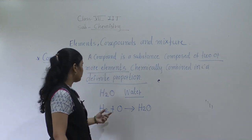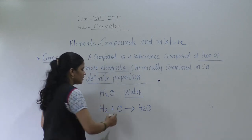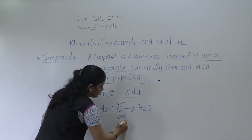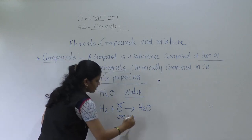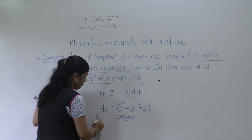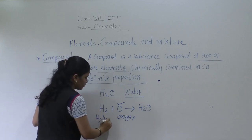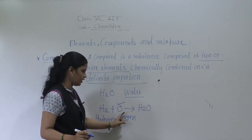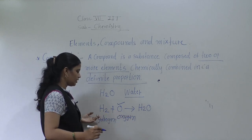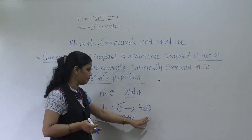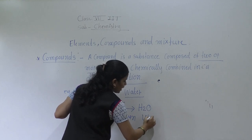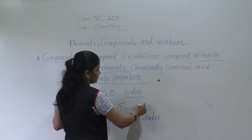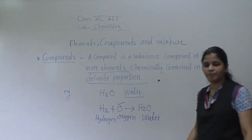Why is H2O a compound? Because here there is more than one element. Oxygen is one separate element and hydrogen is another element. Hydrogen — two atoms, and oxygen — one atom — when they chemically combine together they form a compound known as water. So water is one compound. This is one example.